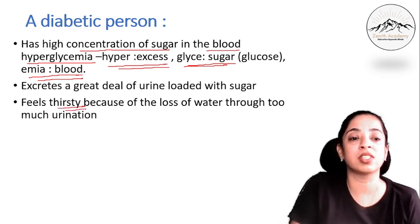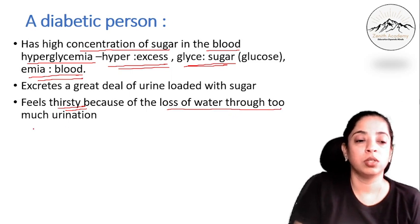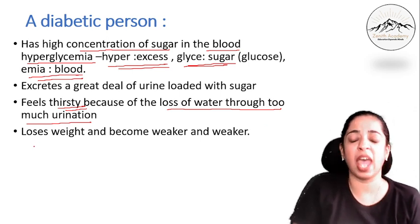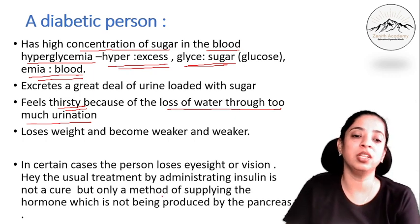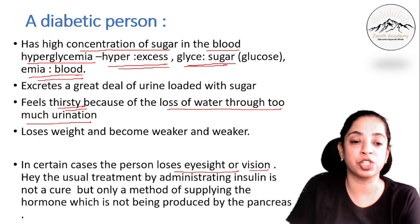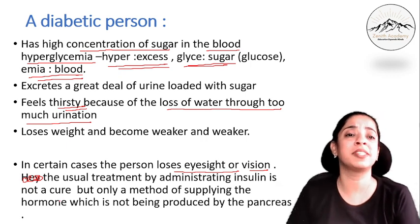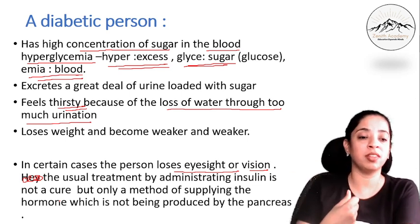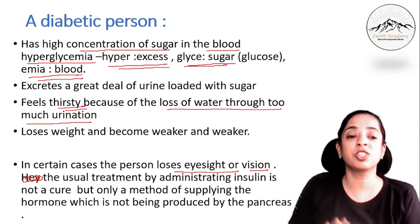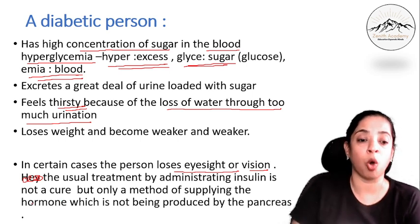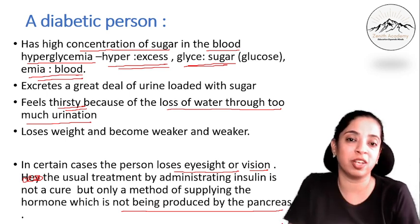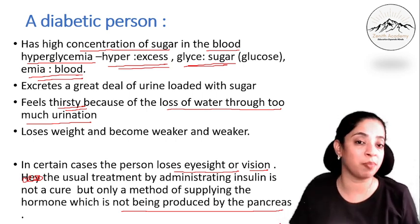The diabetic person feels very thirsty because of the loss of water through too much urination. The person also loses weight and becomes weaker and weaker. In certain cases, the person loses eyesight or vision. The usual treatment by administering insulin is not a cure — it is only a method of supplying a hormone which is not being produced by the pancreas in sufficient quantities, and that is why diabetes mellitus happens.